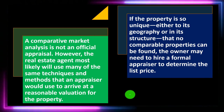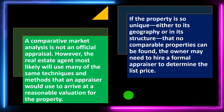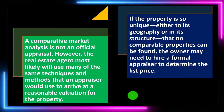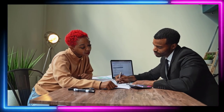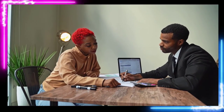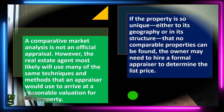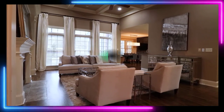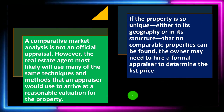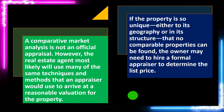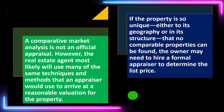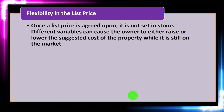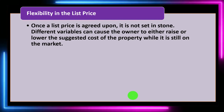If the property is unique — either geographically or in its structure — such that no comparable properties can be found, the owner may need to hire a formal appraiser to determine the list price. Most of the time brokers are fairly good at looking at competitive properties and getting a feel for what houses are selling for in a particular area. But if you've got a home that's completely outside the norm and brokers in the area lack experience with that type of property, you might need different techniques to get a fair appraisal.